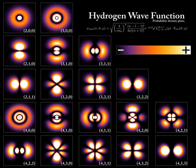If the particle is in an eigenstate of position, then its momentum is completely unknown. On the other hand, if the particle is in an eigenstate of momentum, then its position is completely unknown. In an eigenstate of momentum having a plane wave form, it can be shown that the wavelength is equal to h/p, where h is Planck's constant and p is the momentum of the eigenstate.